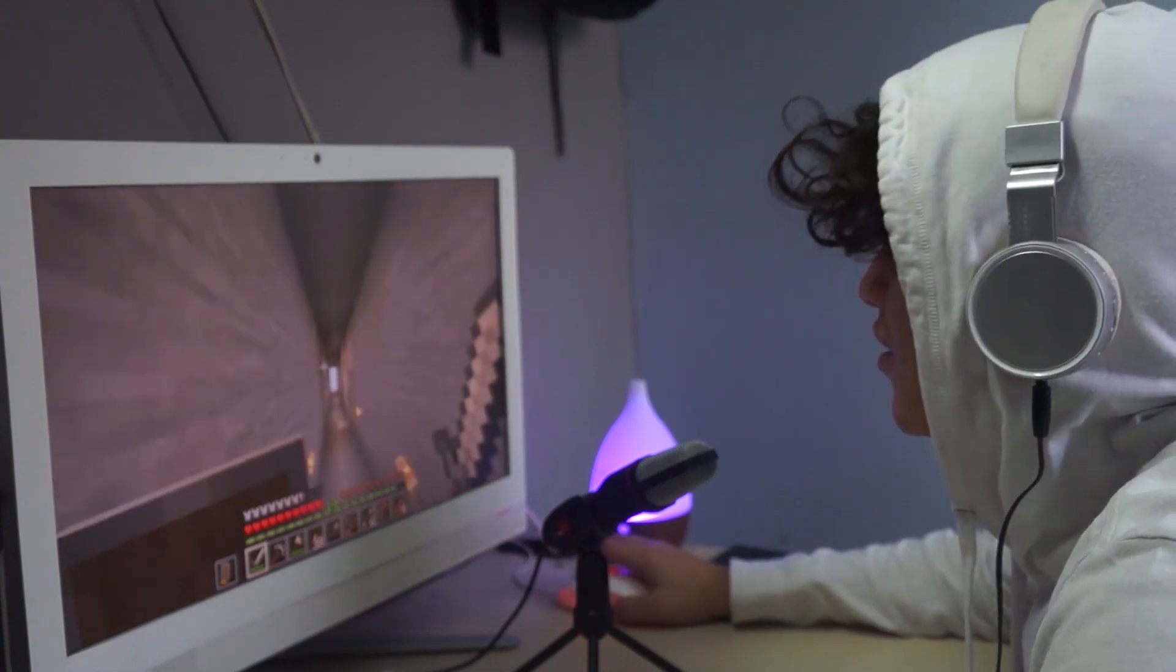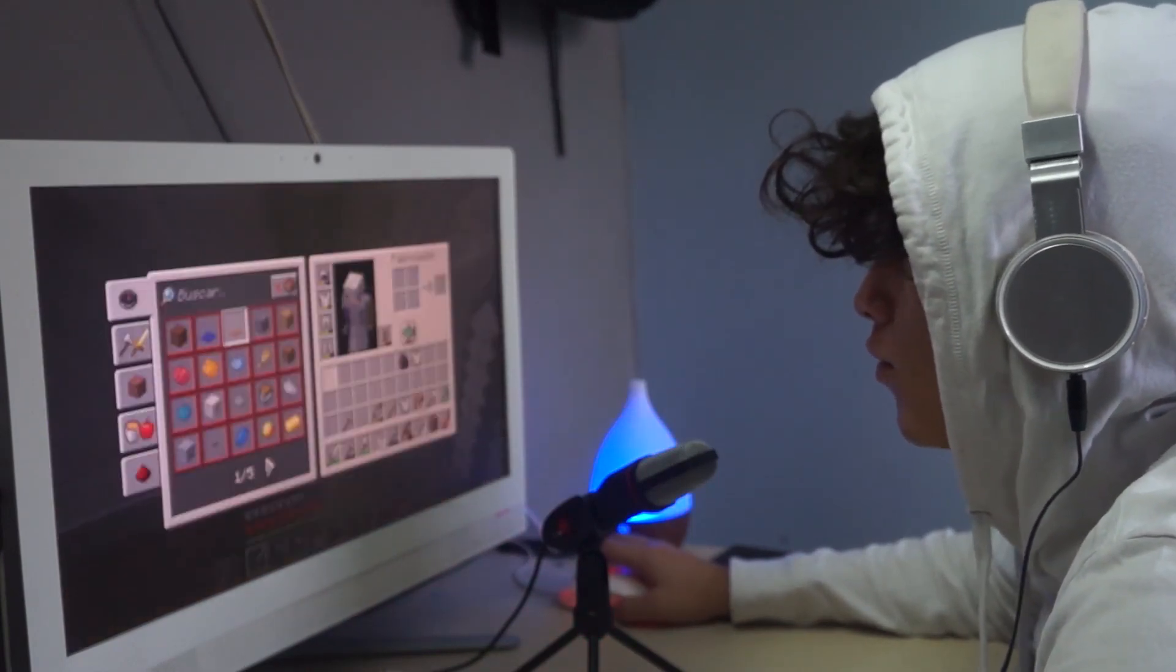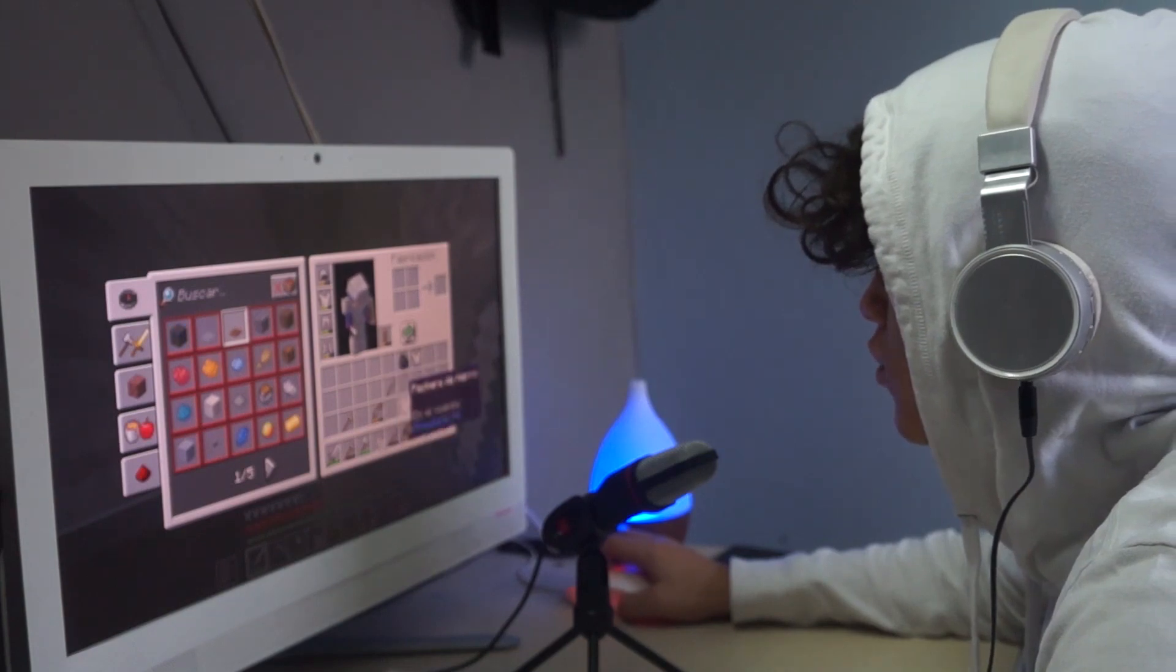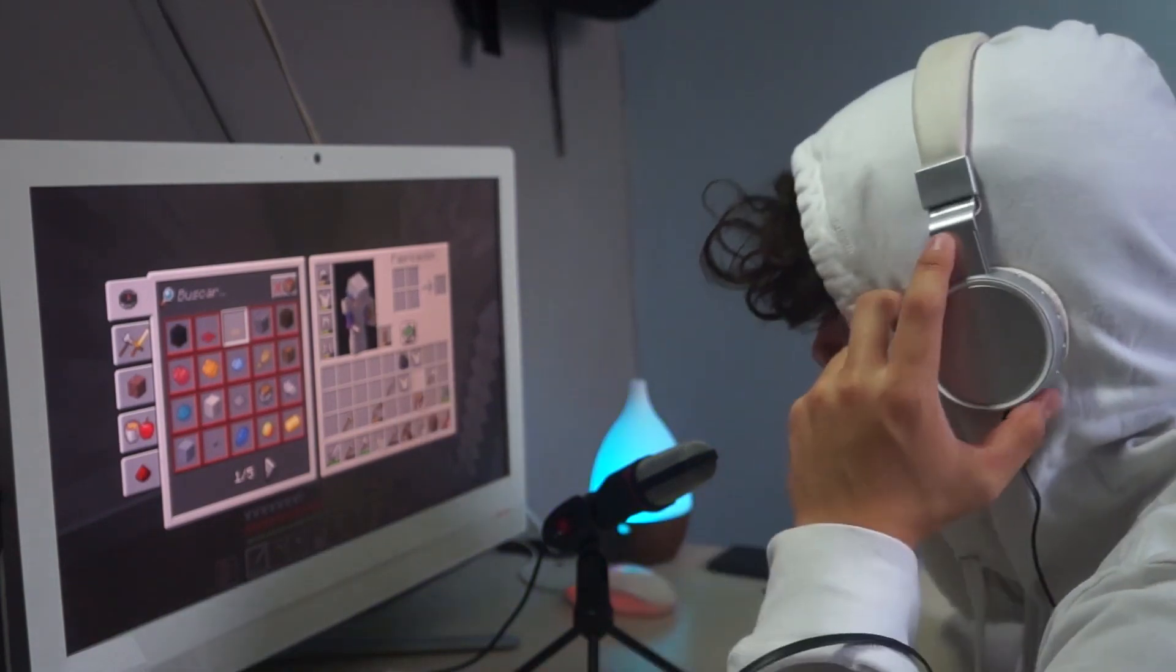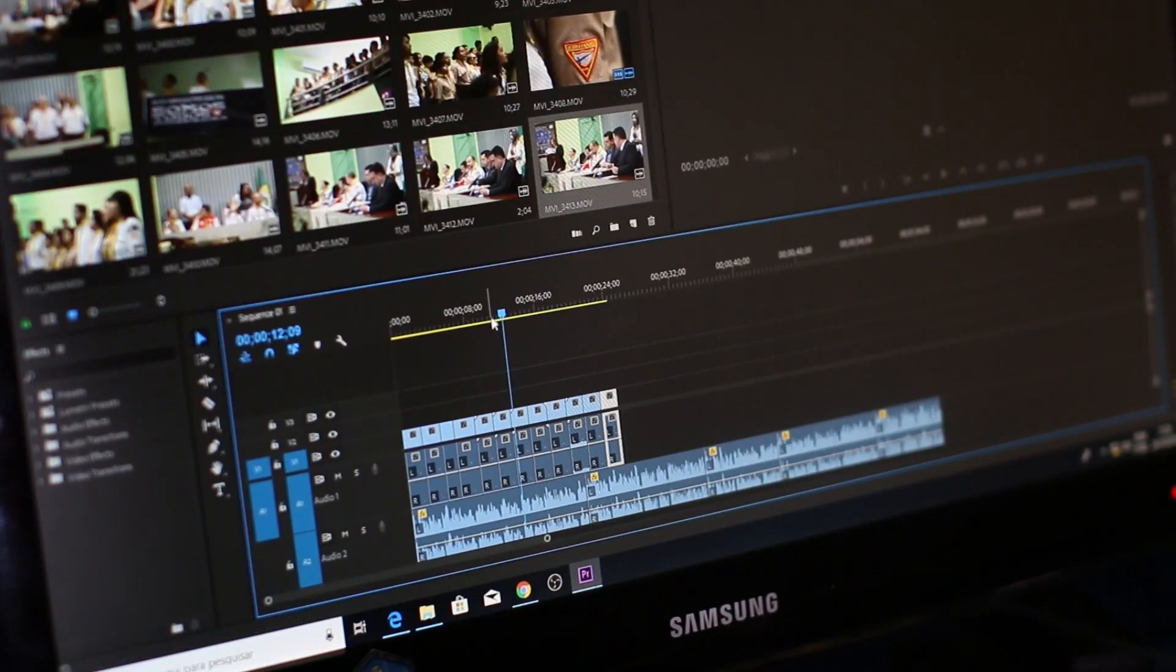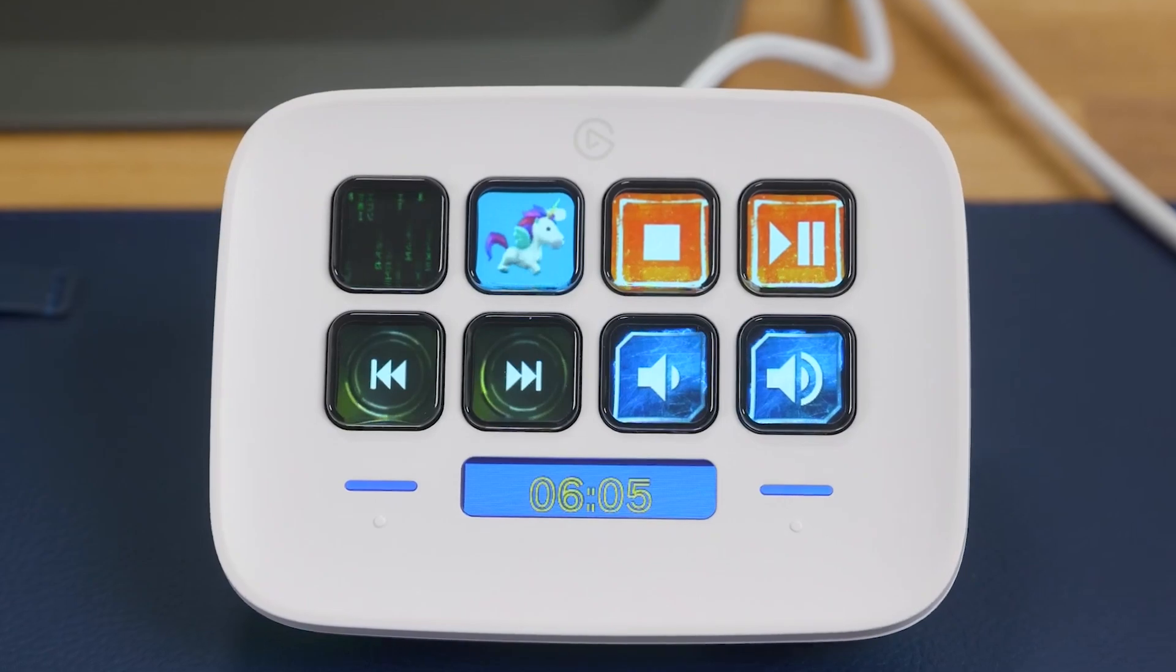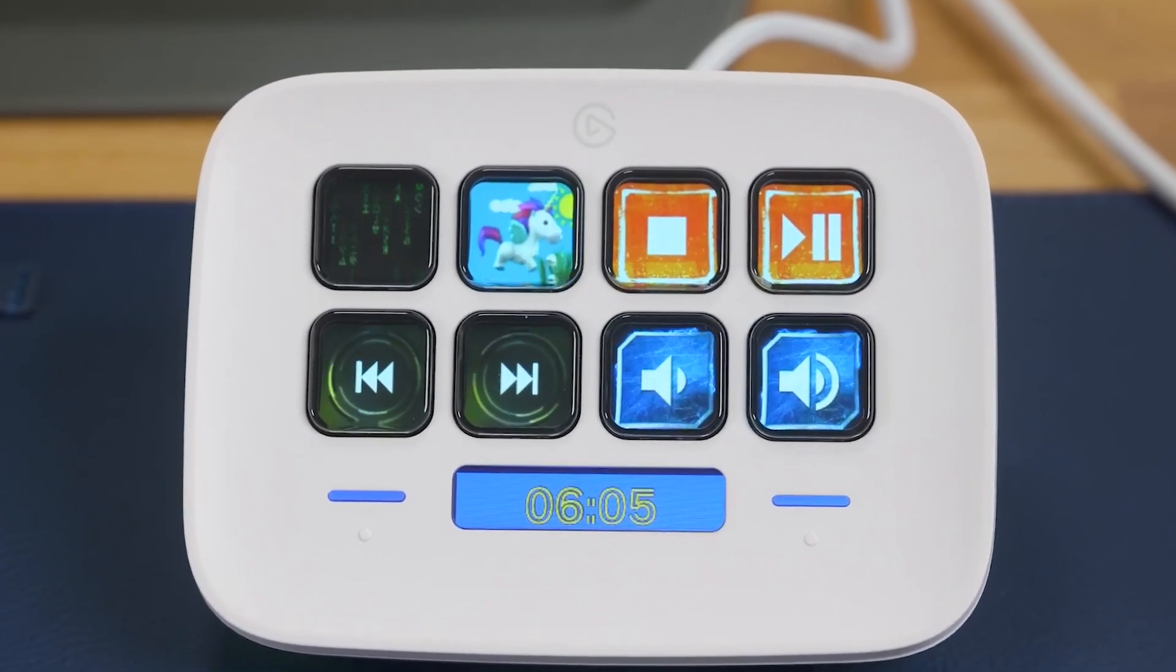Imagine you're live streaming a game on Twitch. With Neo, you can effortlessly switch scenes, trigger animations, play sound effects, and even interact with your chat all without taking your eyes off the screen. Or maybe you're editing a video in Adobe Premiere Pro. The Neo can be customized to serve as a control panel, giving you quick access to tools and shortcuts. I believe that these real-world use cases highlight just how versatile and essential the Neo can be.